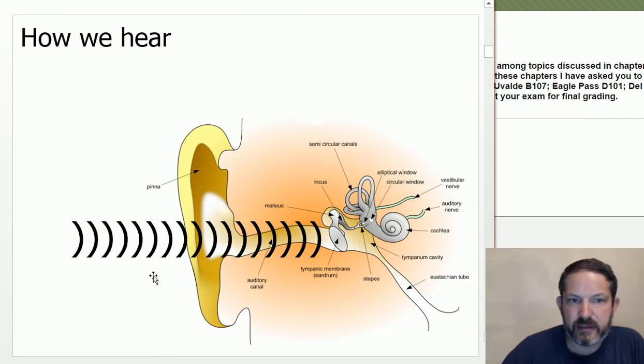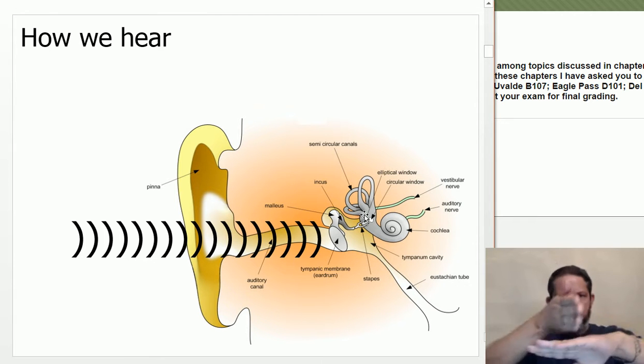Your outer ear, your pinna, collects the sounds, directs it into your ear canal or auditory canal, and vibrates your eardrum, this tympanic membrane. And then you have the malleus, incus, and stapes - this hammer, anvil, and stirrup, these little bones. You're going from a larger membrane here to a very small oval window here, labeled as elliptical, but an oval window on the inner ear. This transmission is just a mechanical amplifier. Like I said, it amplifies it about 20 times.